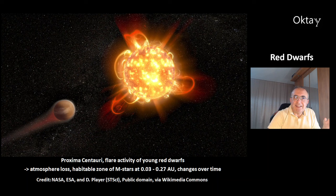This is one key feature of red dwarfs: their flare activity, especially when they are young. You can see the flares going in all directions — some of them will hit the planet. The question is: for a planet in the habitable zone of an M-star, how much atmosphere will be lost due to these flares?